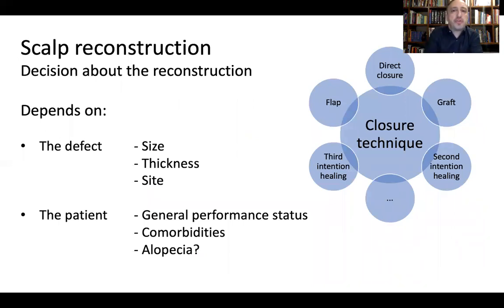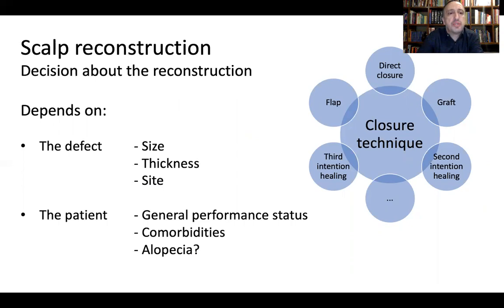When deciding about reconstruction, we have several options — from direct closure up to flaps, passing through grafts, and second-intention healing. The decision depends not only on the defect but also on the patient. We have to consider the size, thickness, and site of the defect, as well as the patient's overall performance status, comorbidities, and whether the patient has pre-existing alopecia.